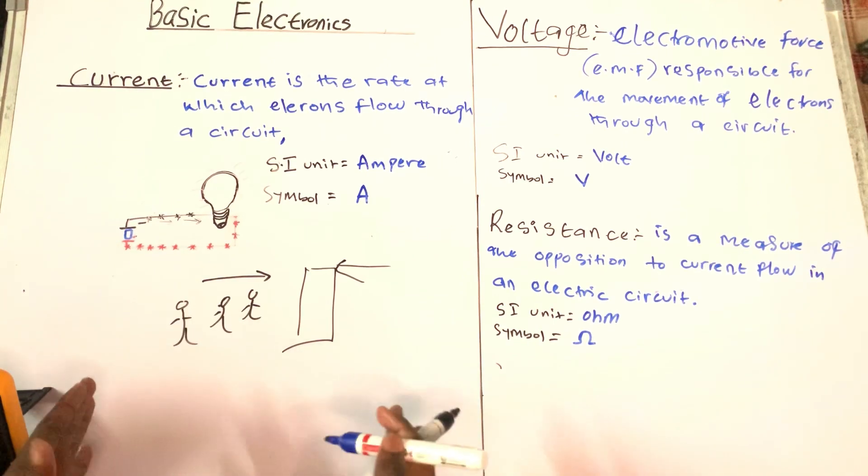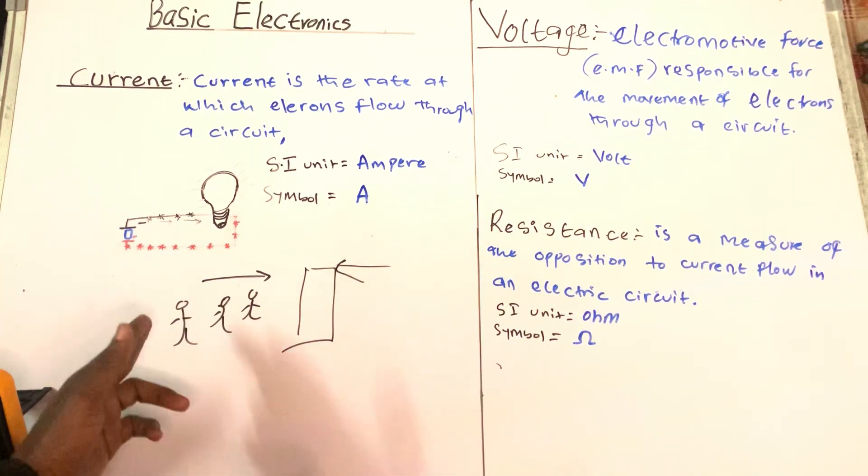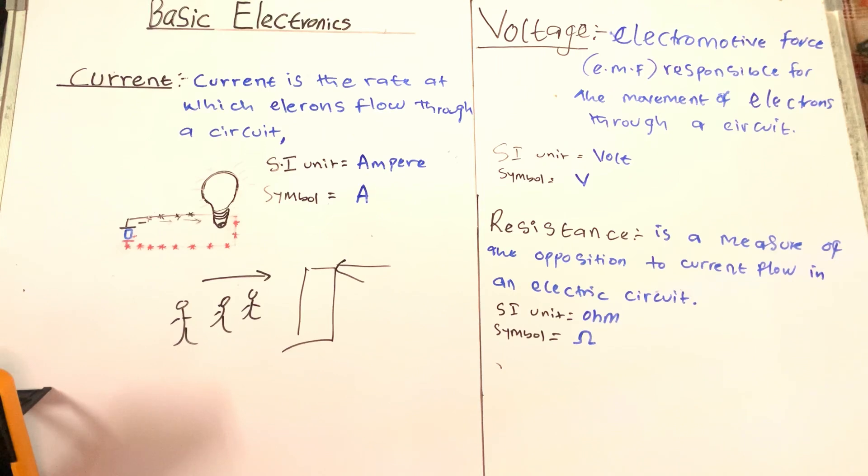Now resistance is the opposition of the flow of these electron charges, these charges here. And the SI unit of resistance is ohms, and it is denoted by this symbol which is omega (Ω).